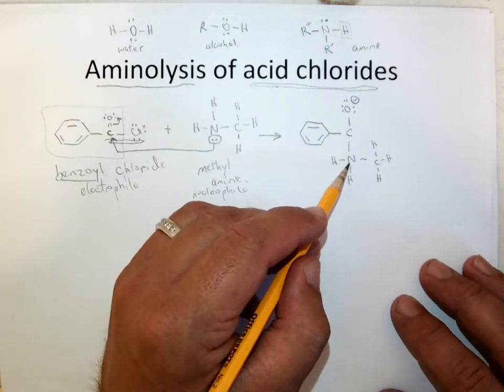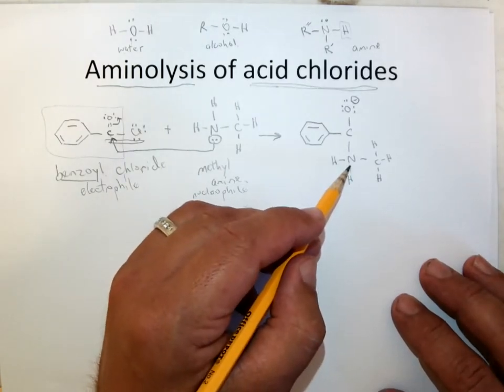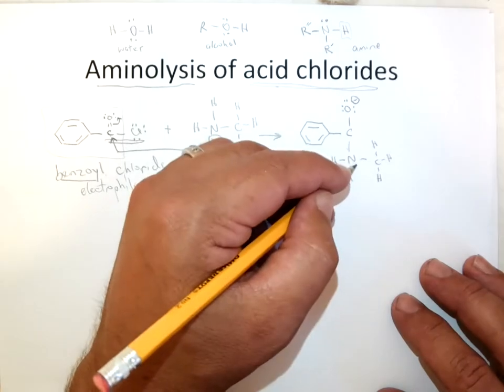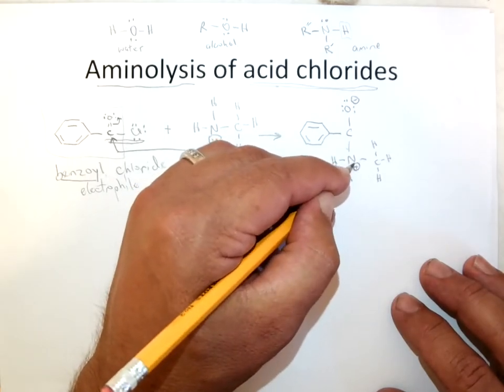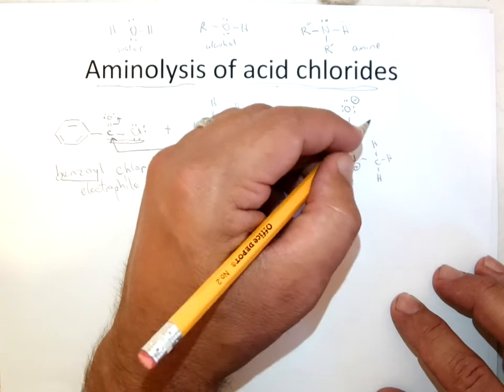And if you look at the formal charge on the nitrogen, neutral nitrogen would have five valence electrons. This one gets assigned one, two, three, four. So positive nitrogen there.